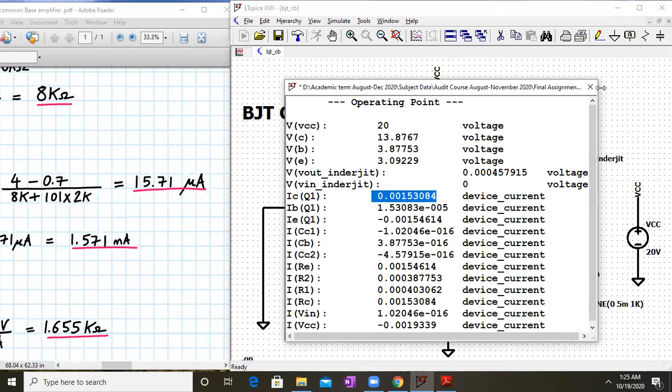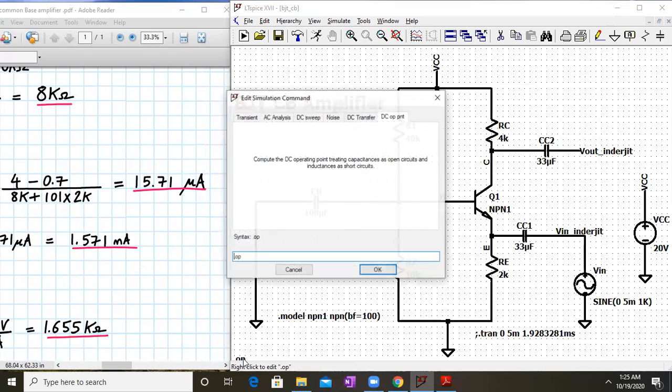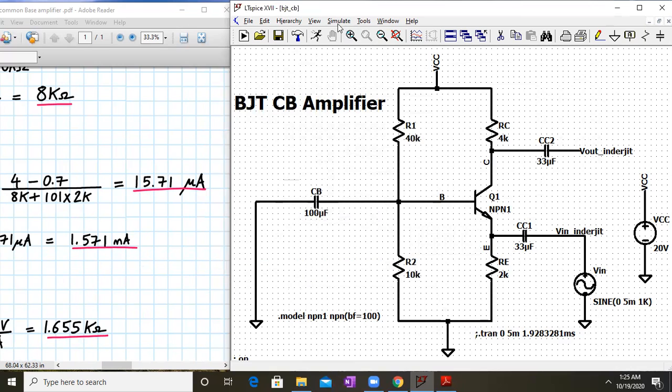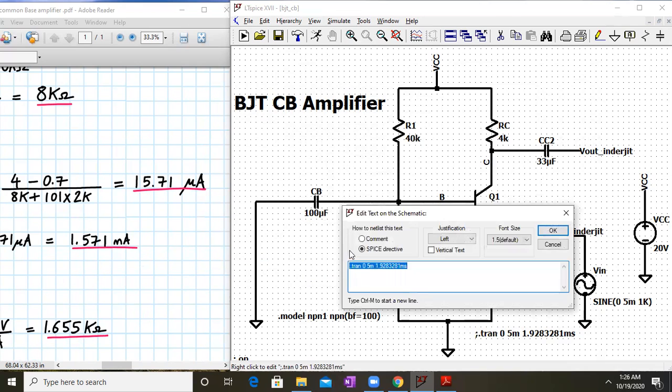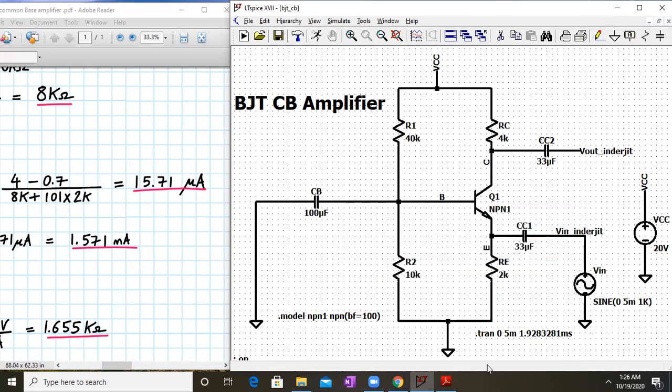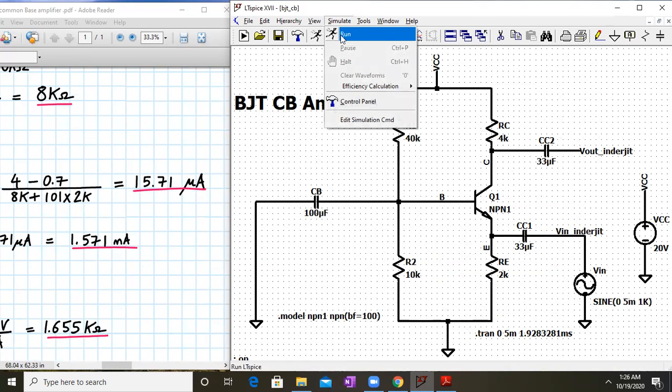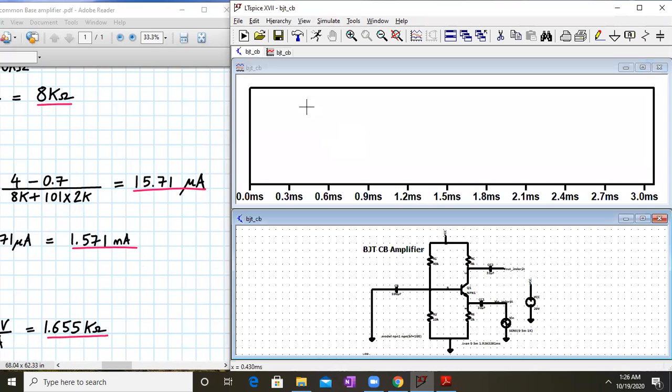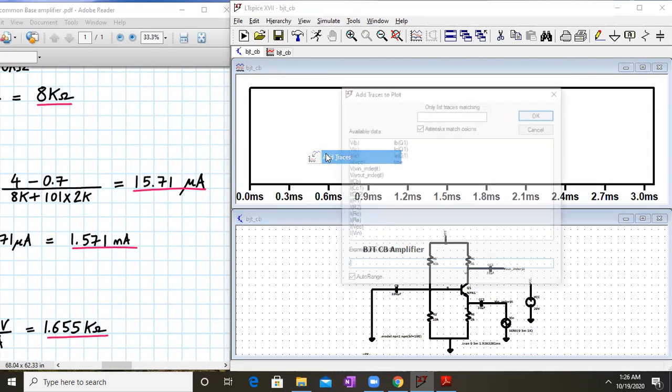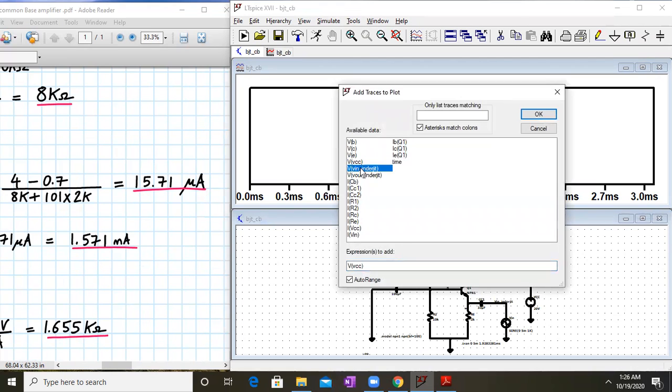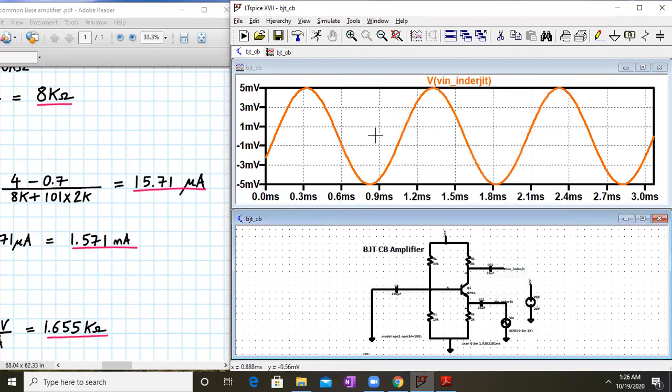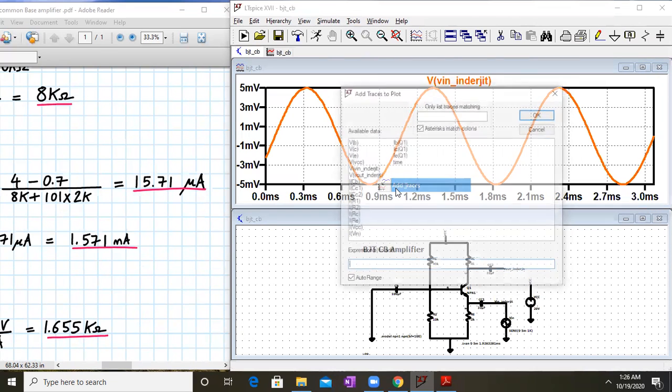Now let us close this. Let me deactivate this .op. So right click on .op and put a semicolon sign. Now let me activate this .tran. This .tran is for transient analysis. So I'll set it to 0 to 5 milliseconds and I'll simulate it. I'll get a blank screen. Right click on it. Add trace. Enter your VIN. And this is my VIN 10 millivolt peak to peak and next I'll check the V out.